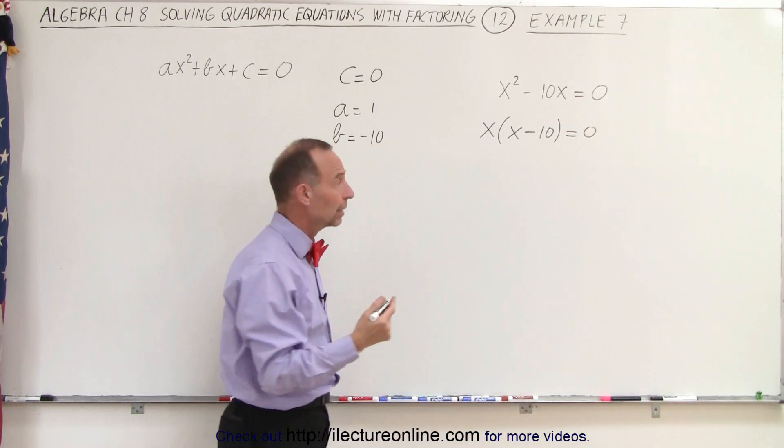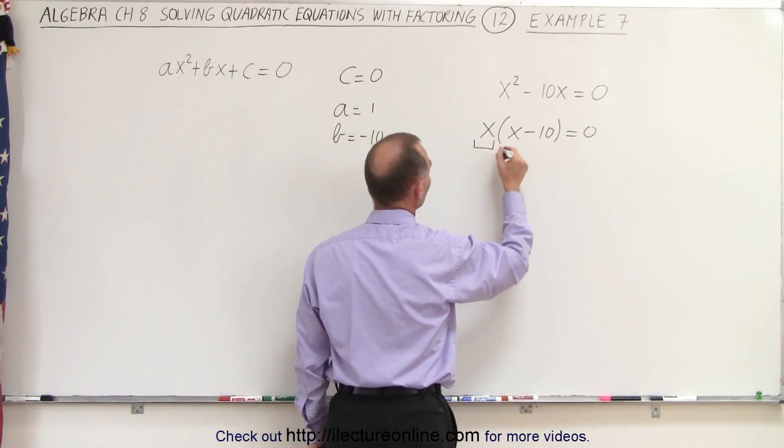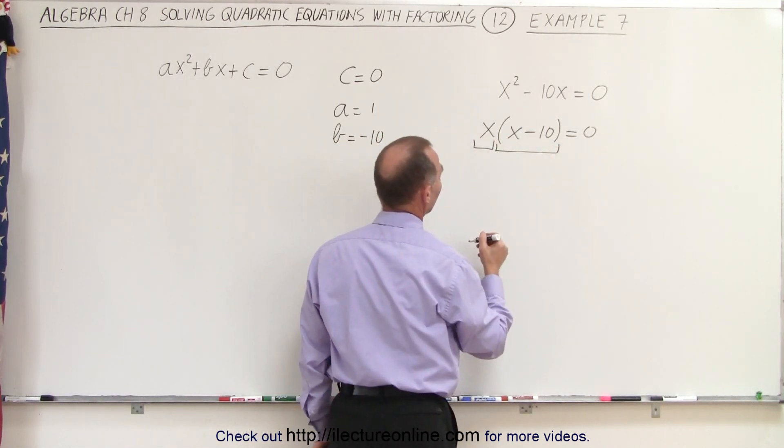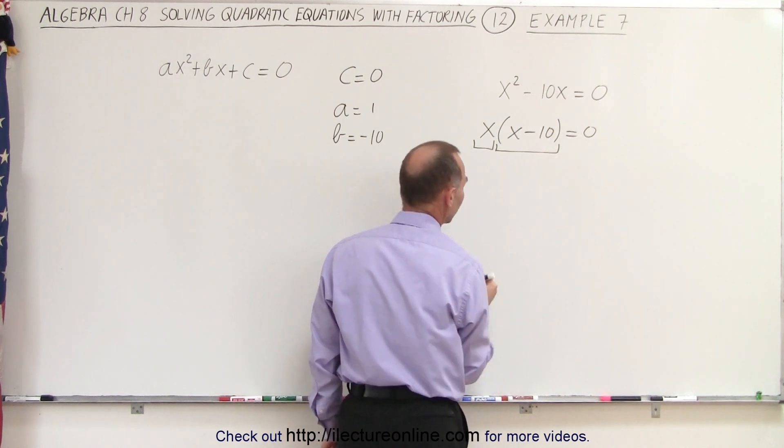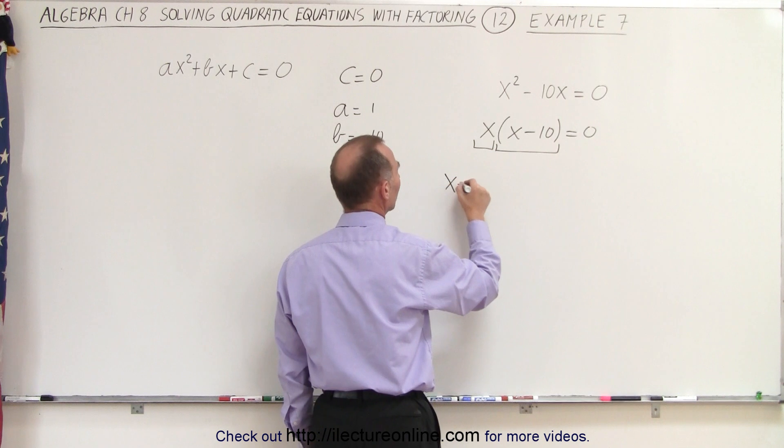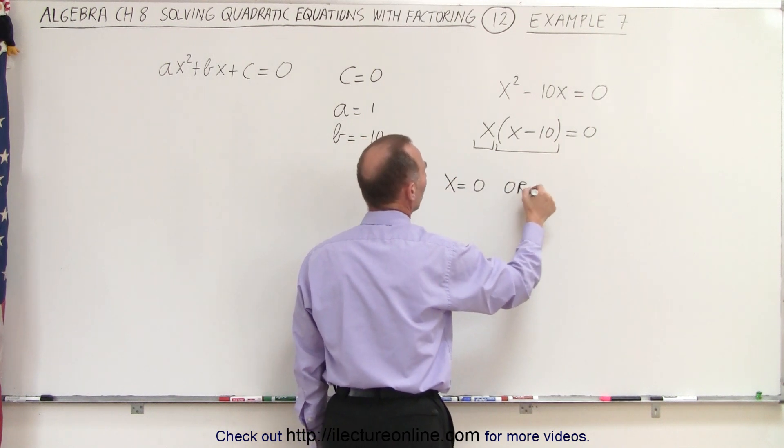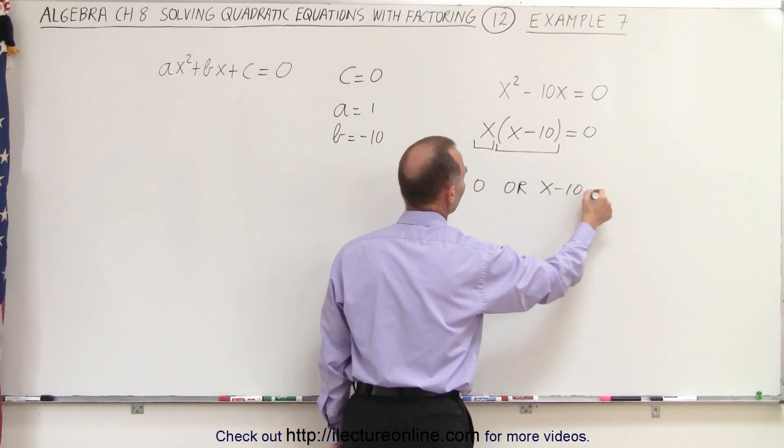And again we have a product. Here the product is X times the binomial X minus 10, and since when we multiply we get the result being zero, that means that X must equal zero, or X minus 10 must equal zero.